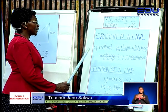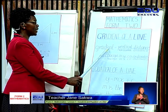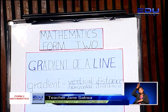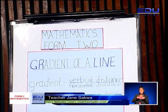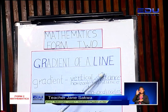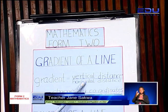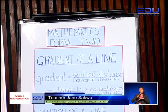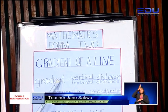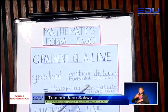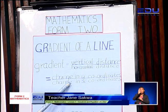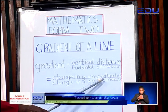What is a gradient? A gradient is the vertical distance over the horizontal distance. It is a ratio, and this ratio measures the vertical distance and the horizontal distance. In the Cartesian plane, we can say the gradient is the change in y coordinate over the corresponding change in the x coordinate.